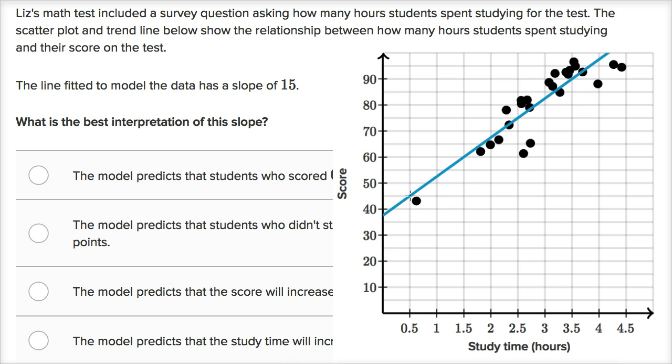So if we start over here and we were to increase by one hour, our score should improve by 15. And it does indeed look like that. We're going in the horizontal direction one hour, and then in the vertical direction we're going from 45 to 60. So that's how I would interpret it.